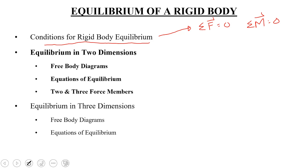After that, we came to our first major topic in this chapter, which is the equilibrium of a rigid body in two dimensions. We considered a rigid body being acted upon by a co-planar force system, where all those forces were acting within a plane, and all the moments are basically acting perpendicular to that plane.